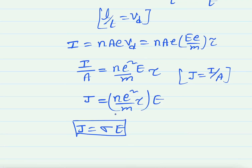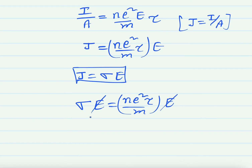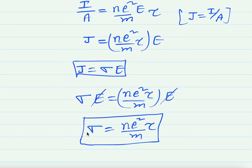We know the general relation j equals sigma into E. Comparing the two equations, since the left-hand sides are equal we can equate the right-hand sides: sigma·E equals n·e squared·tau by m into E. The E cancels, giving sigma equals n·e squared·tau by m. This is the expression for electrical conductivity in terms of relaxation time. This is a very important five marks question from the current electricity chapter. If you are watching Srihan Academy YouTube channel for the first time, please subscribe and click on the bell icon.